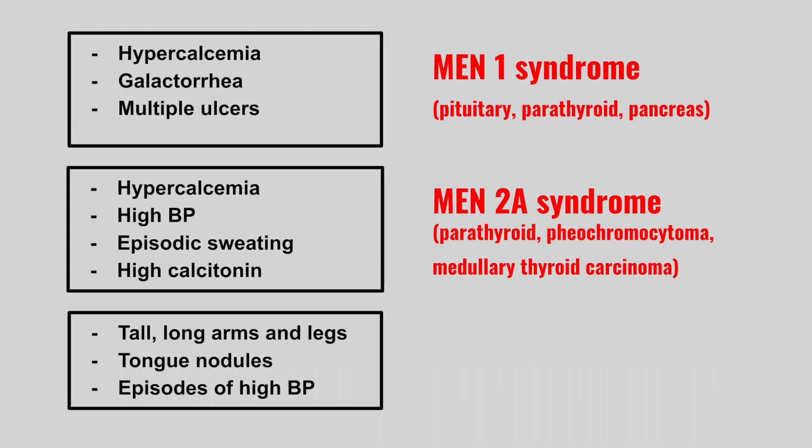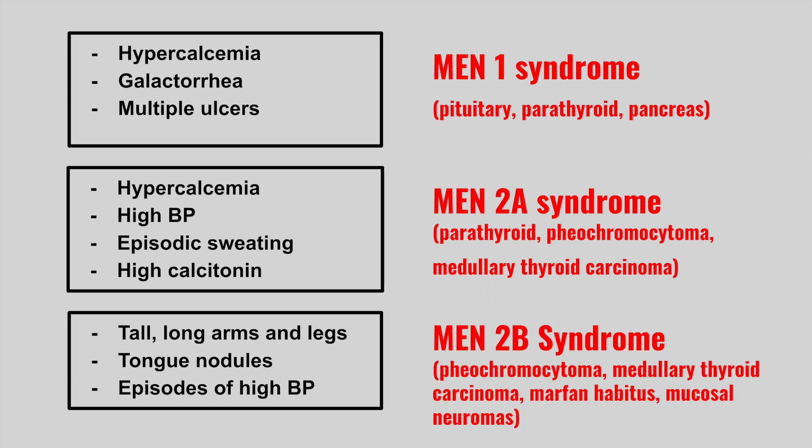The next patient is very tall, has long arms and legs, nodules on the tongue, and episodes of high blood pressure. This is MEN-2B syndrome, where we have a pheochromocytoma and medullary thyroid carcinoma, similar to MEN-2A. But here we also have a Marfan habitus and mucosal neuromas, signified by the nodules on the tongue.